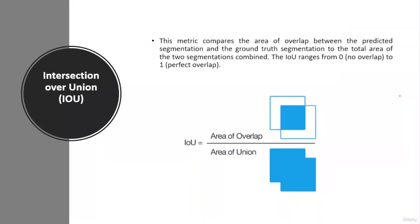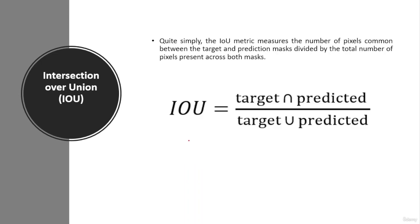What is the intersection over union metric? Intersection over union is equal to area of overlap divided by area of union. Basically, intersection over union compares the area of overlap between the predicted segmentation and the ground truth segmentation to the total area of the two segmentations combined. The mean intersection over union is a metric used to evaluate the performance of a semantic segmentation model, which measures the number of pixels common between the target and the prediction masks divided by the total number of pixels present across both masks.